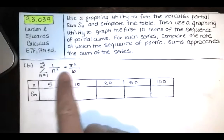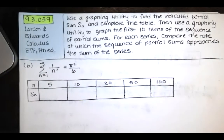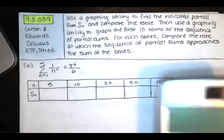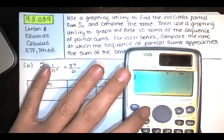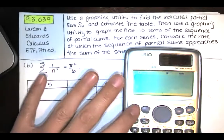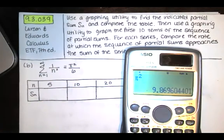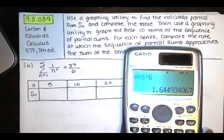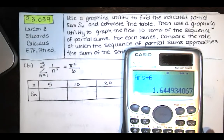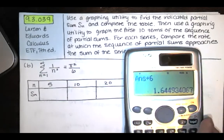The sum of this series for 1 over n squared turns out to be pi squared over 6. Let's just approximate what that is — that's about 1.64493. That's what we're expecting.